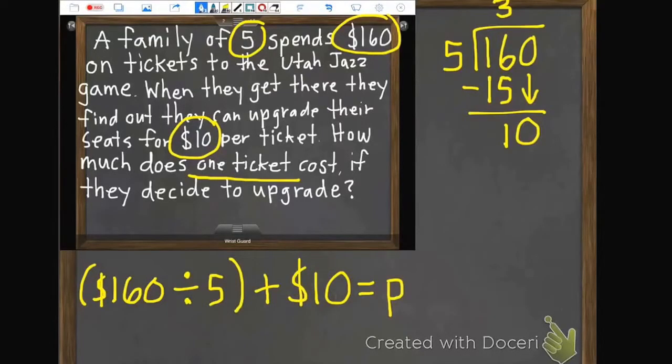So 10 divided by 5 is 2. 2 times 5 is 10. 10 subtract 10 is 0. There's nothing left to bring down. No remainder. So it cost $32 for each ticket. And that was before they upgraded.